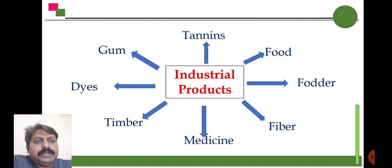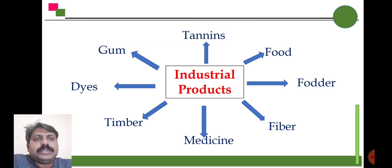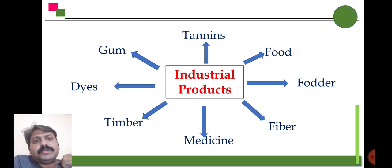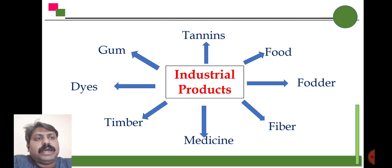We are getting medicines from plants, we are getting timber — that is furniture required for our household — from plants, we get dyes from plants, we get gum from plants, and we get tannins from plants. All these resources are essential for the better life of human beings.